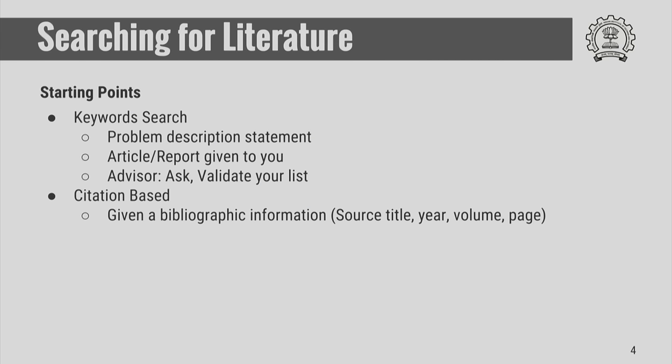When you search for literature, there are two methods you could adopt to look for relevant material: keyword-based and citation-based. Keyword-based search is used when you do not have any article to begin with. You simply start with some keywords from the problem description, or you could take a report or article given to you and look for keywords from the title, abstract, or keyword section. You might also ask your advisor for some keywords and validate your list.